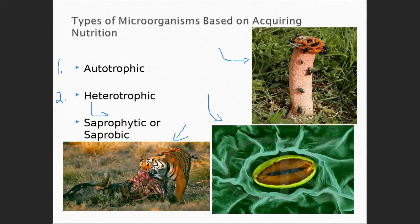There is a misconception out there. A lot of people will say the plants use photosynthesis to create energy — that's not true. The plants use photosynthesis to create carbohydrates, sugar. And then they have to undergo cellular respiration in order to produce ATP. Now, heterotrophic — trophic meaning to feed — hetero means you have to consume something else in order to get your nutrients.